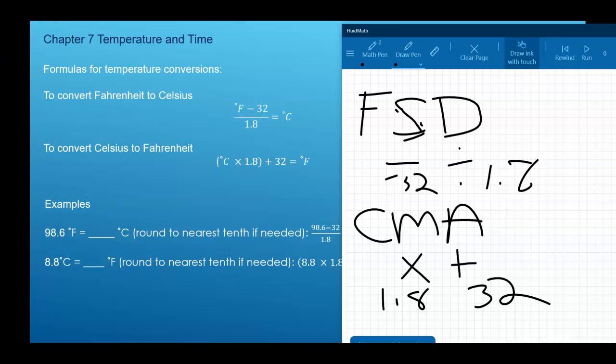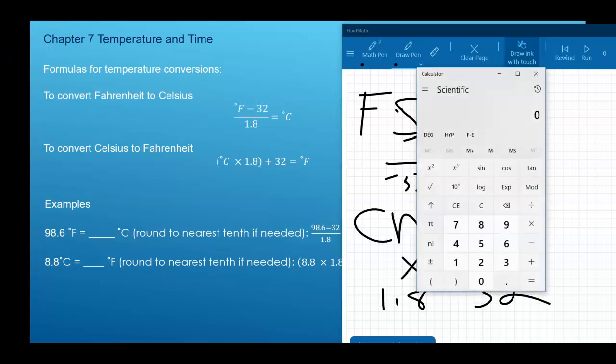So 98.6 Fahrenheit, FSD. So I subtract 32, then I divide 1.8. That's 37 degrees Celsius.